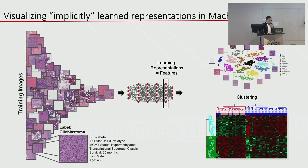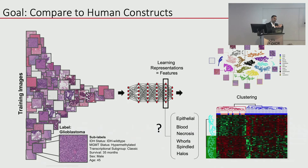Our lab is interested in finding the implicit structures of how neural networks make decisions, using unsupervised tools. The real question is: can we go into the network and find which parts represent human constructs? Is there an epithelial feature in the neural network? Is there a blood feature? A necrosis feature? Do the features resemble how we look at images, or are they completely random — just pixels that are nonsensical to us?